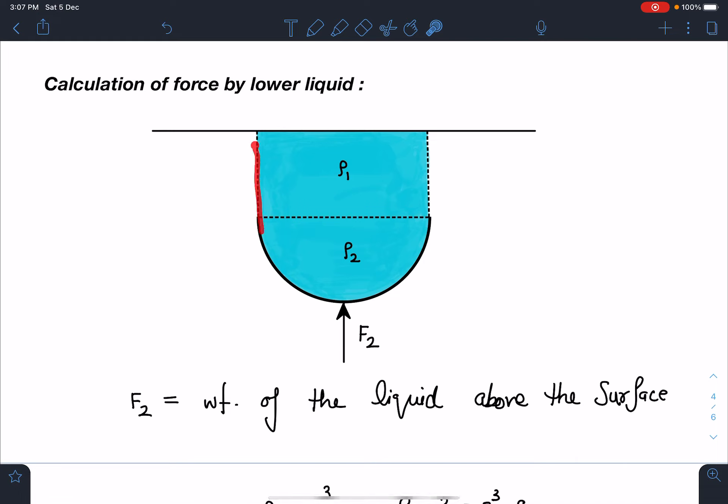Calculation of force by the lower liquid: now here though in reality in this part liquid is not present, but if it was present maintaining the same configuration as if two layers are present, in that situation force on this hemisphere, lower hemisphere, its numerical value will be equal to weight of the liquid above the surface.